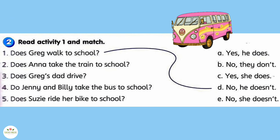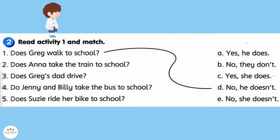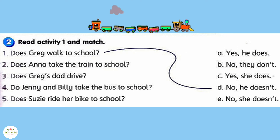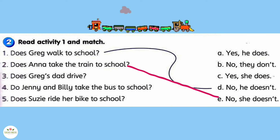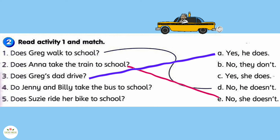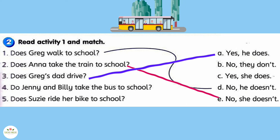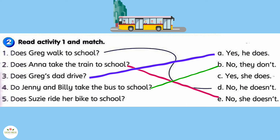Activity 2. Read the story in Activity 1 again and match. 1. Does Greg walk to school? No, he doesn't. 2. Does Anna take the train to school? No, she doesn't. 3. Does Greg's dad drive? Yes, he does. 4. Do Jenny and Billy take the bus to school? No, they don't. 5. Does Susie ride her bike to school? Yes, she does.